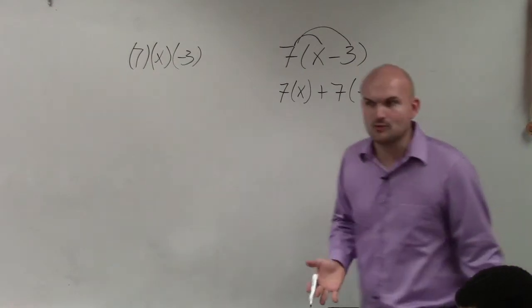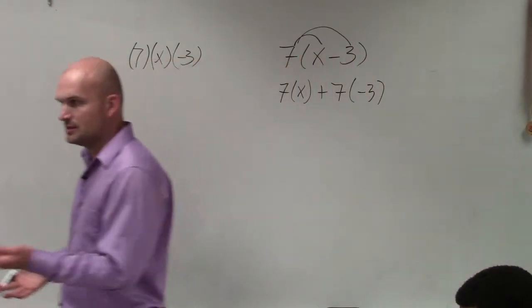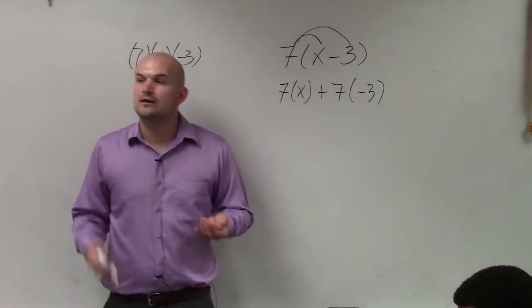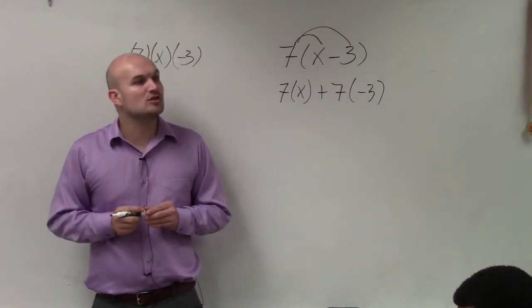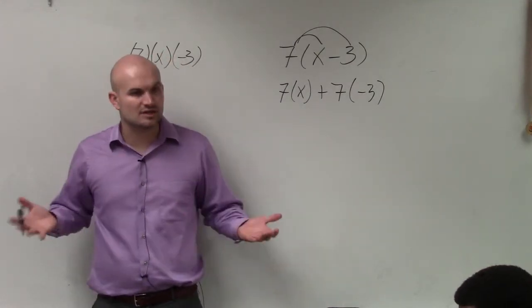Now we're getting into multiplication of unlike terms. 7 and x are not like terms. Fortunately for us, when we're multiplying, we do not have to have like terms.